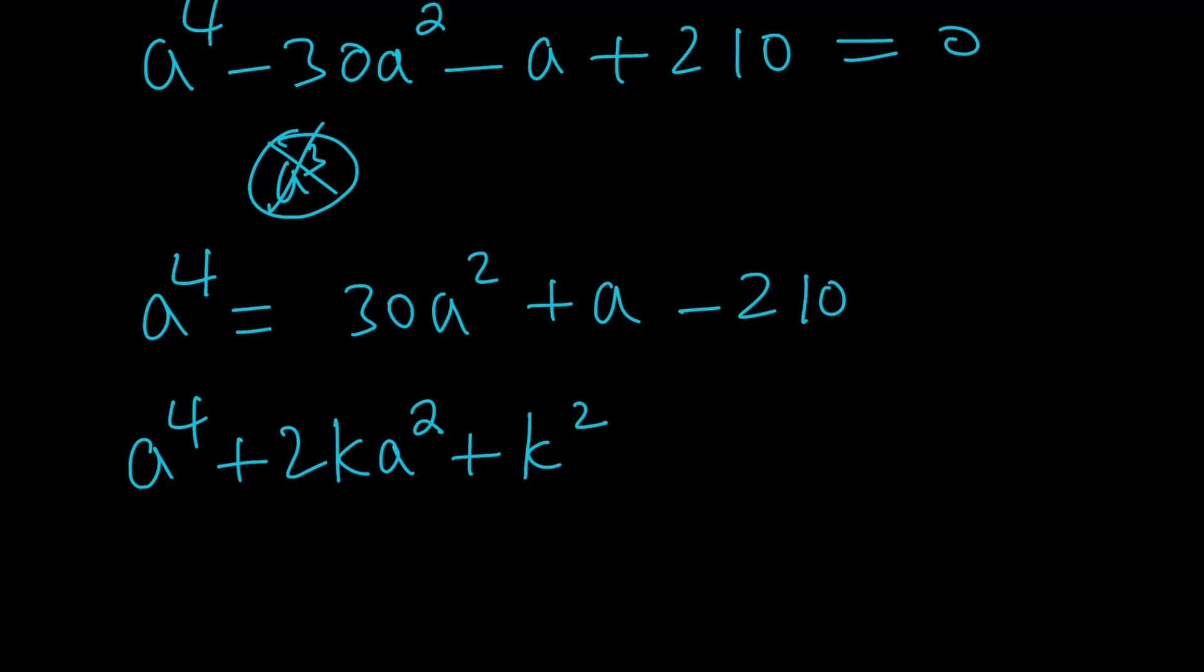So far, so good. Are you following? Now, what do you need to add? So here's what we're going to add to both sides. We're going to add 2k a squared. So we're going to add that in the middle. And then we're going to add k squared. So in other words, we're going to be adding 2k a squared plus k squared.